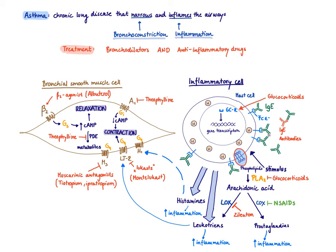There is one other drug used to treat asthma that doesn't have a direct identifiable target, so it's hard to draw into this picture. It basically just stabilizes the mast cell, and that drug is cromolin. We don't know exactly how it works, but if cromolin is present, there is less mast cell degranulation.